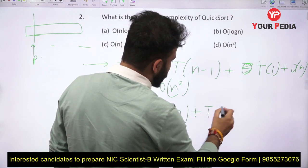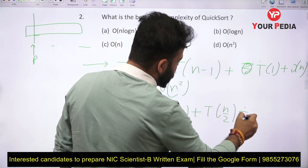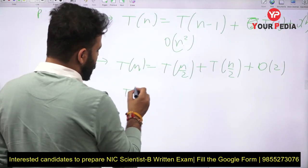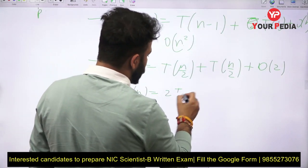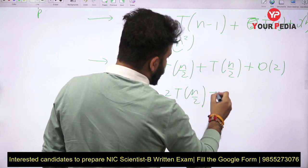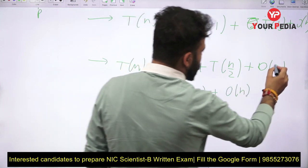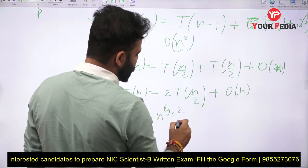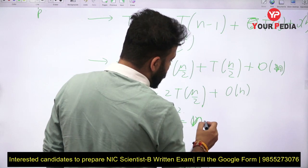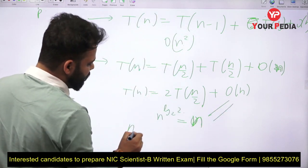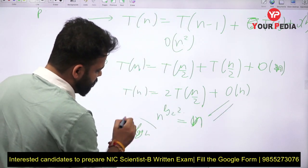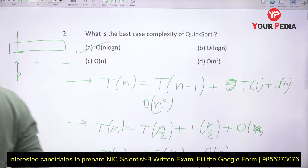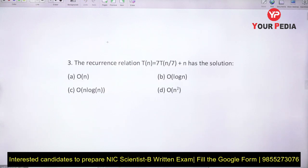For the best case, the recurrence relation is T(N) = T(N/2) + T(N/2) + O(N), when you divide the array into two equal parts. Solving this using the Master Theorem gives N log₂ 2 which equals N, matching the O(N) term, so the best case time complexity for quicksort is O(N log N).